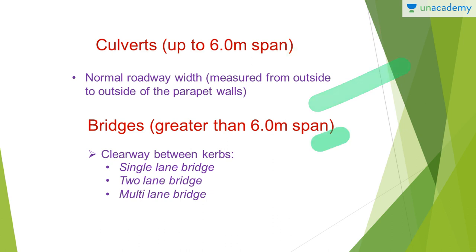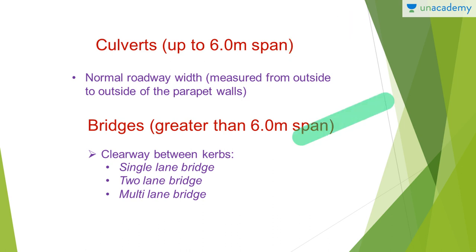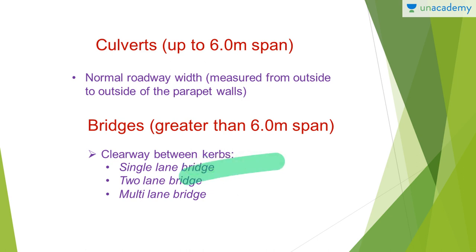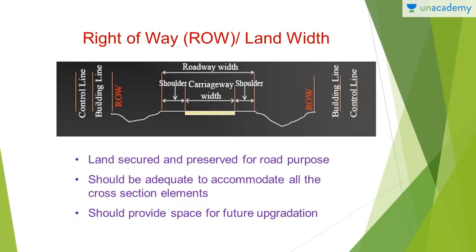If the span is more than 6 meters, bridges are provided. The clearway between curbs determines whether you have a single lane bridge, a two lane bridge, or a multi-lane bridge.